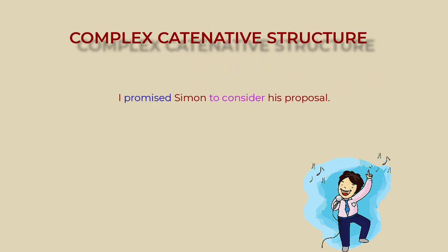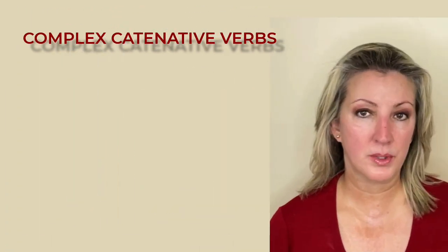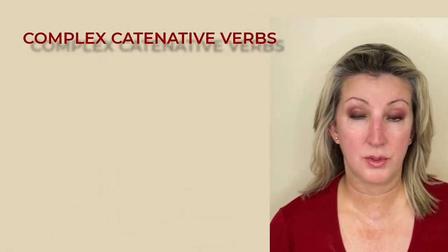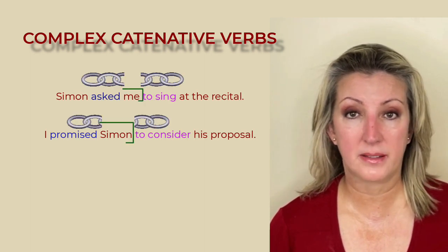I promised Simon to consider his proposal. Again, this is an example of a complex catenative because 'Simon' is interrupting the catenative verb 'promised' and the catenated verb form 'to consider.' The chain is broken by the direct object, Simon.